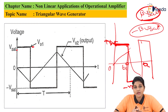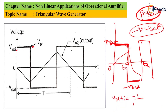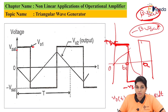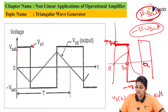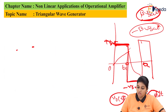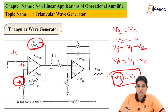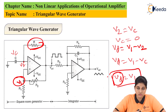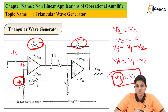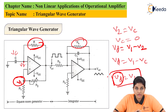This square wave is then applied as input to the integrator circuit. The integrator output is: Vo2 equals minus one over R1·Cf times the integral of Vin(t) dt. This indicates that the output is the integration of the input signal. Looking at the circuit diagram, the integrator used is a practical integrator circuit, because resistor R4 is connected in the feedback path parallel to the capacitor C, which makes it a practical integrator circuit.